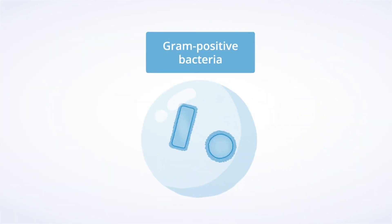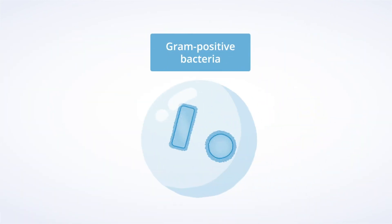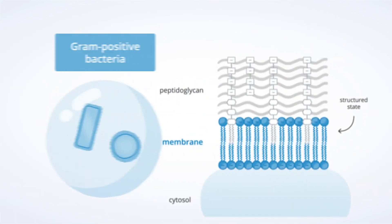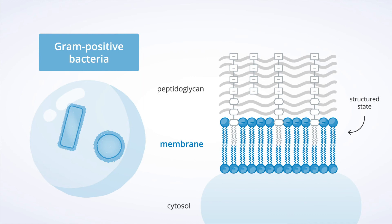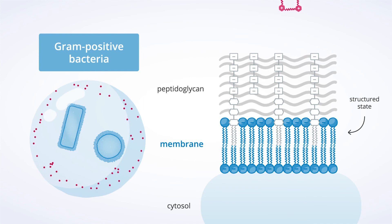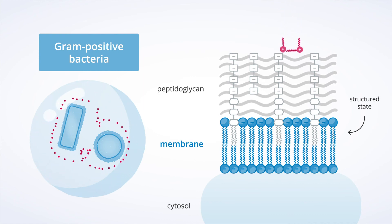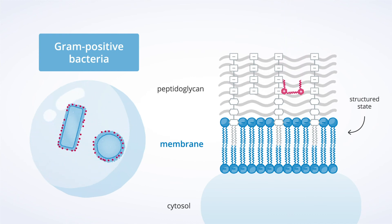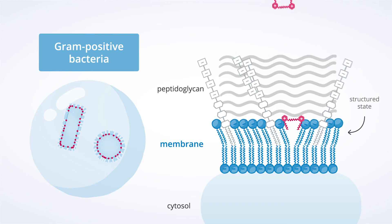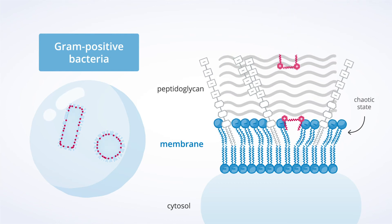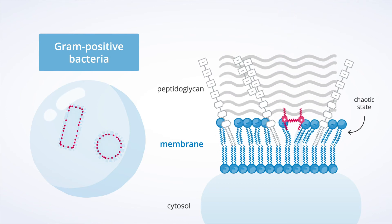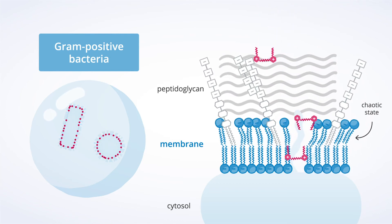Even though the membrane structure of gram-positive bacteria differs, the effect of Octenidin is identical. The molecule permeates the cell wall and destabilizes the cytoplasmic membrane due to physical interactions.